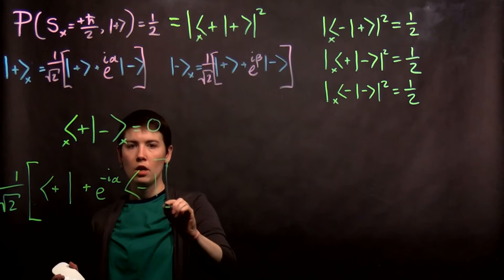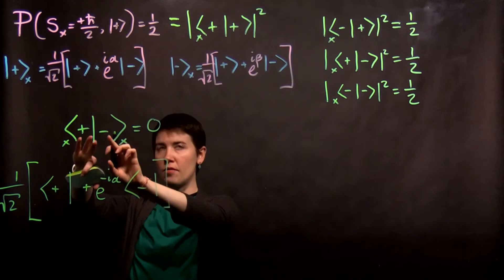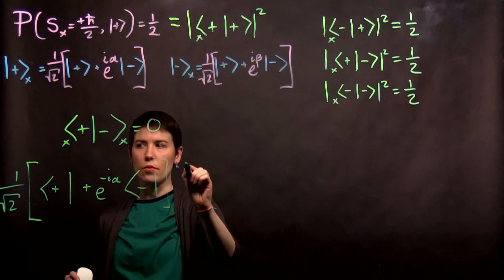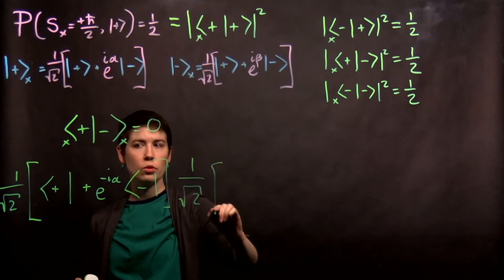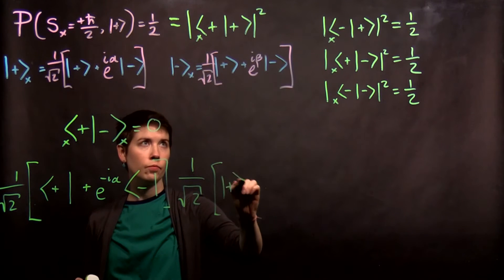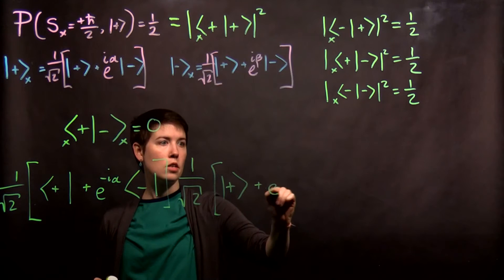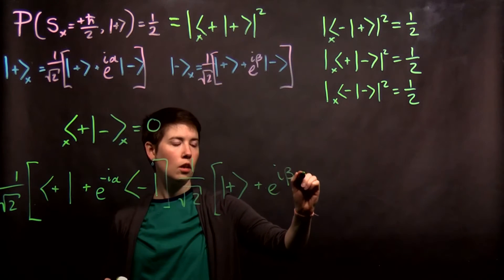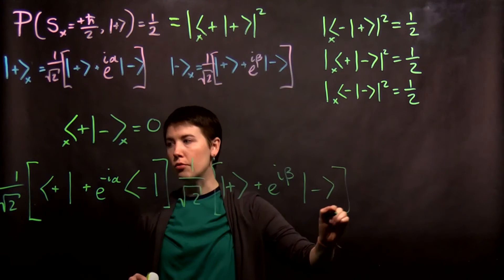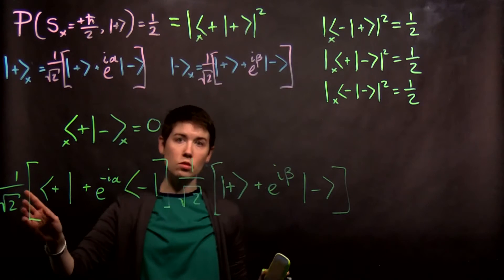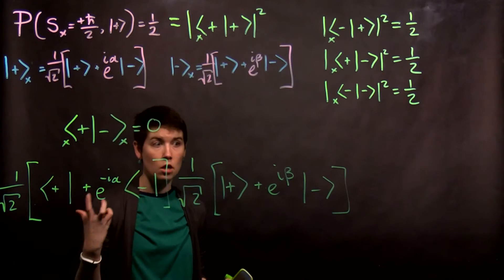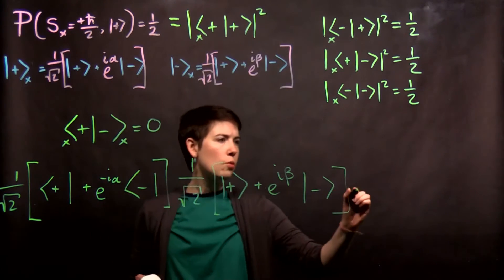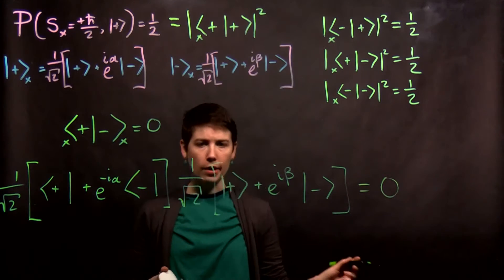And then we have now, this state can come down directly, 1 over square root of 2, and then we have up, e to the i beta, and then down. And again, remember that any time we're not writing a subscript, that implies that it's our z basis. So this needs to equal 0.